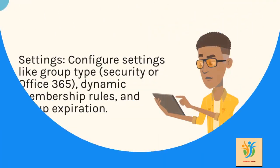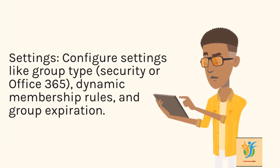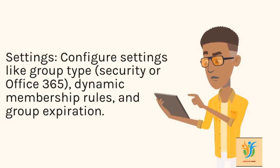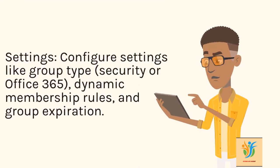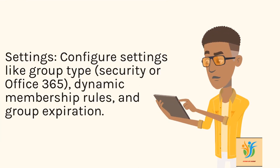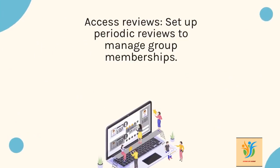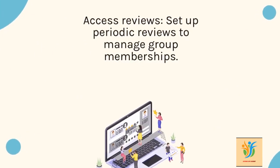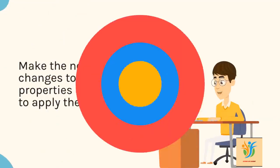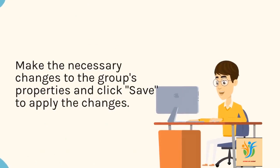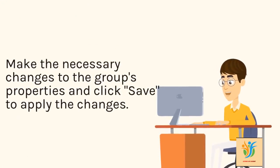Settings: configure settings like group type — security or Office 365 — dynamic membership rules, and group expiration. Access reviews: set up periodic reviews to manage group memberships. Make the necessary changes to the group's properties and click Save to apply the changes.